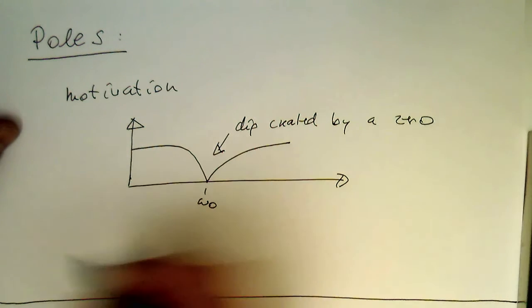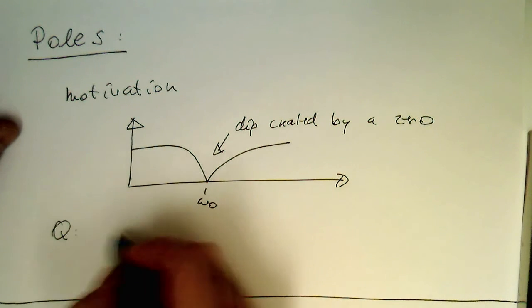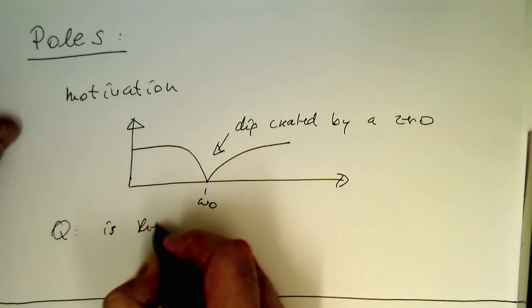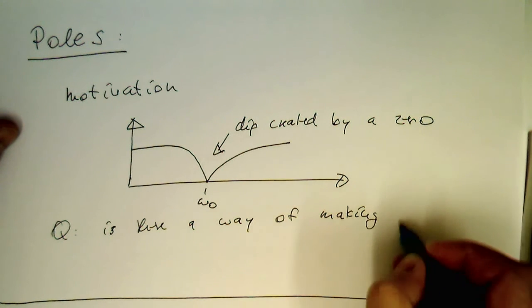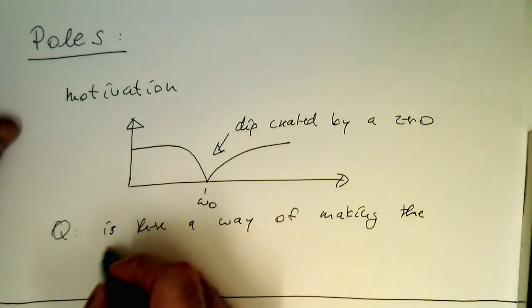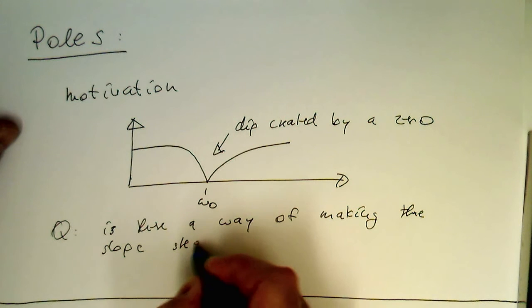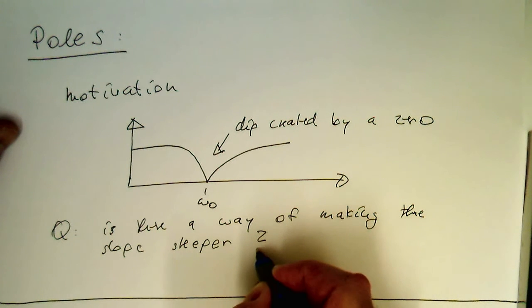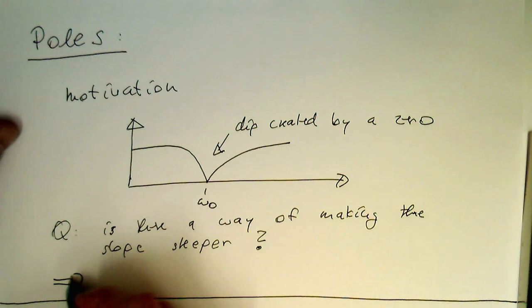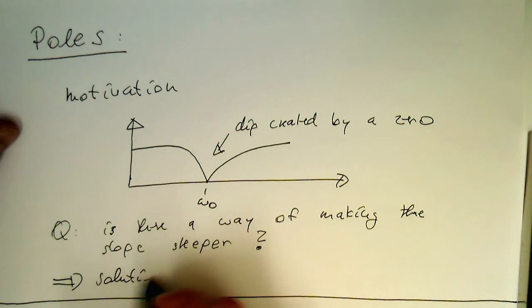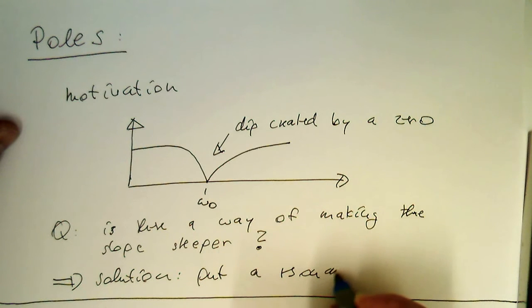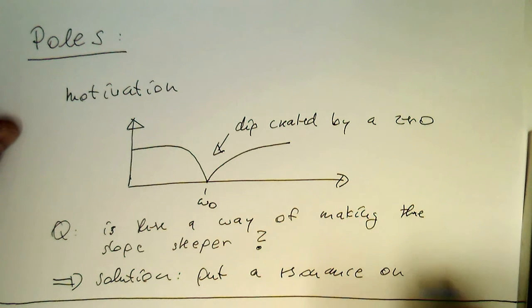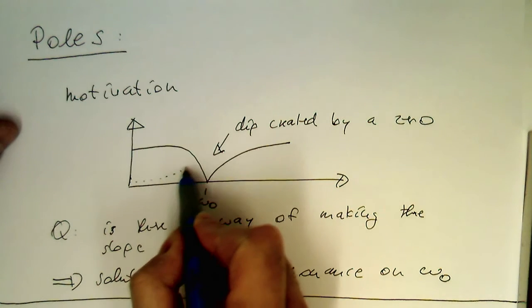So the question is, is there a way of making the slope steeper? The solution to this here is put a resonance on omega zero. So the resonance generates something like that.